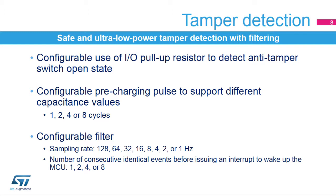The pin level is sampled at the end of the pre-charging pulse. A filter can be applied to the tamper pins. It consists of detecting a given number of consecutive identical events before issuing an interrupt to wake up the device. This number is configurable and can be 1, 2, 4, or 8 events at a programmable sampling rate from 1 to 128 Hz.